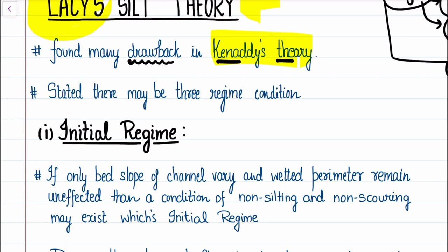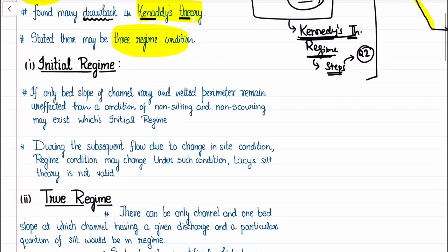In Lacy's theory, he proposed that there is not one single state of regime. Instead, there are basically three regime conditions — three stable conditions for an irrigation canal or channel. He categorized those three conditions as initial regime, true regime, and final regime.